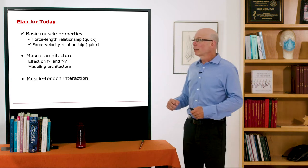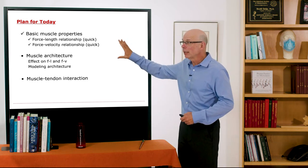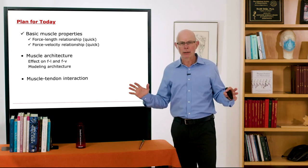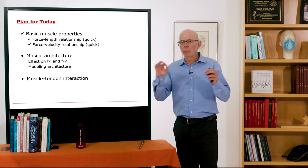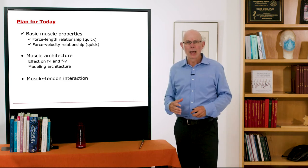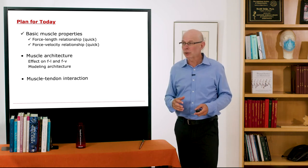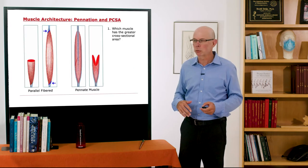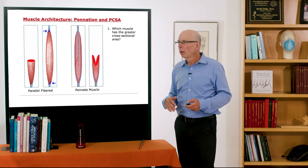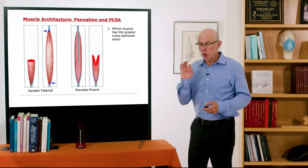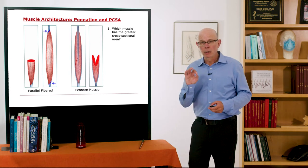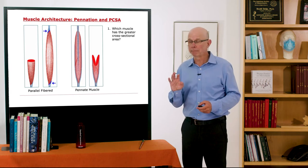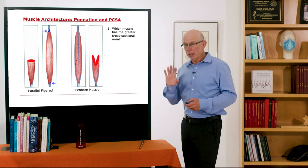We talked about force-length and force-velocity relationships. Now let's talk about muscle architecture. It's fascinating — we have muscles of a wide variety of architectures: long muscles, fat muscles, short muscles, small muscles, and they have profound influence on how muscles act in the body. Let's look at how muscle architecture affects the force-length and force-velocity curves, starting with two architectural features: pinnation angle and physiologic cross-sectional area.